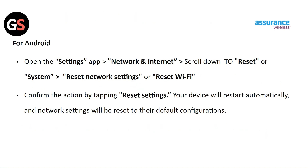For Android, open the Settings app and go to Network and Internet. Scroll down to Reset or System, then select Reset Network Settings or Reset WiFi. Confirm the action by tapping Reset Settings. Your device will restart automatically and network settings will be reset to their default configurations.